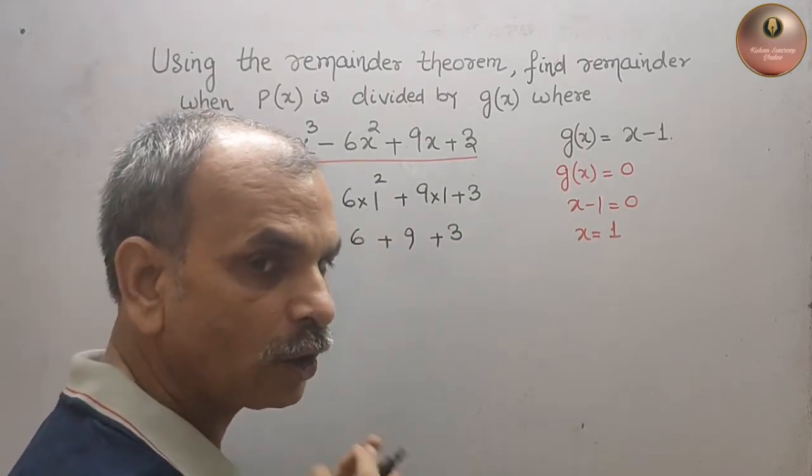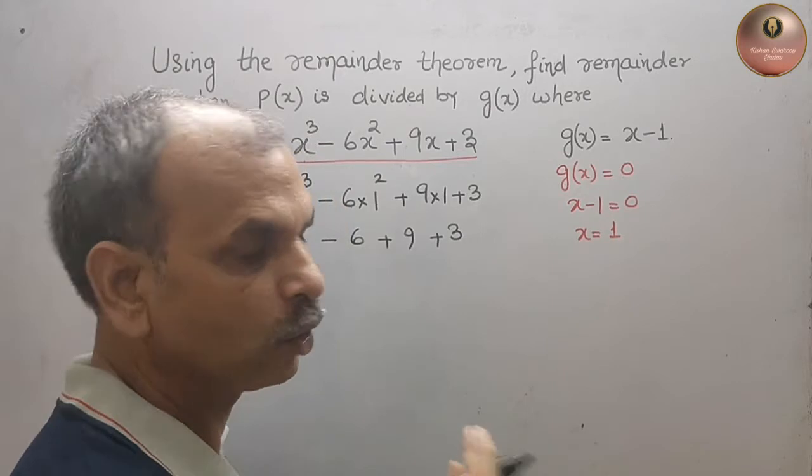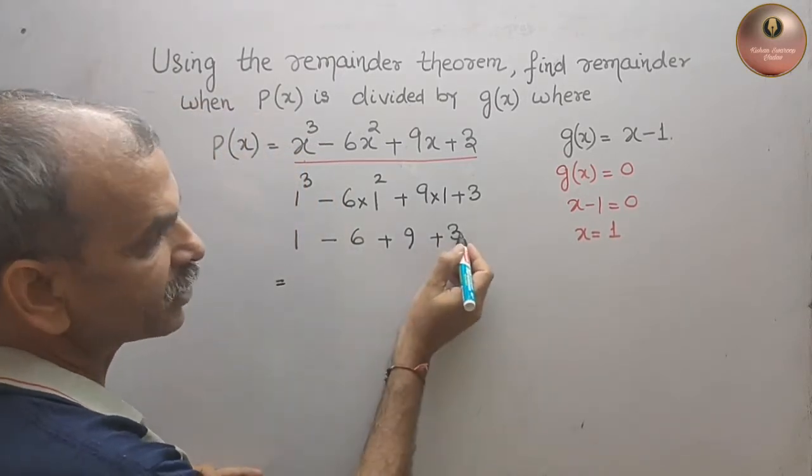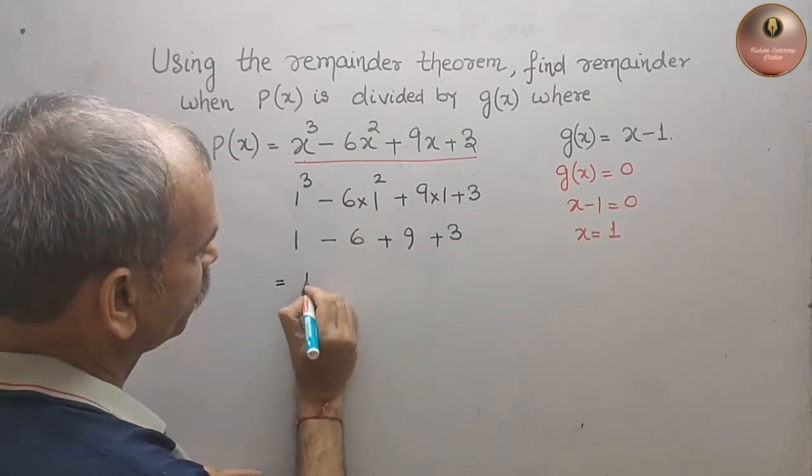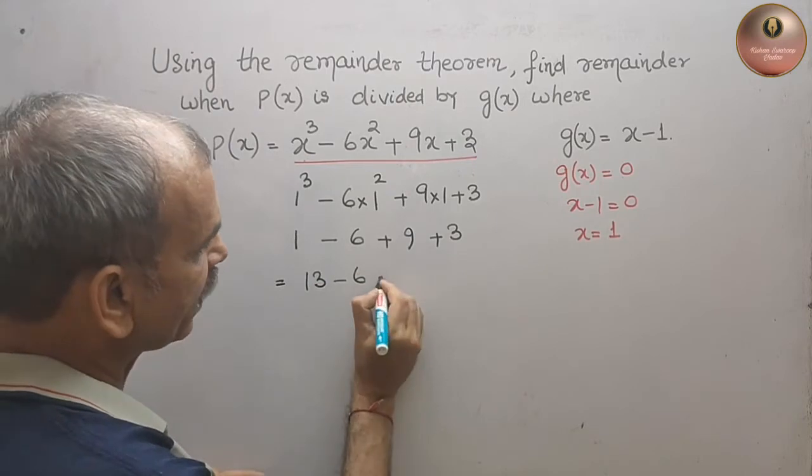Now add all the positive ones and separately negative ones also. What you will get? 9 plus 1 is 10, 10 plus 3 is 13. 13 minus 6, that gives you what? 7.